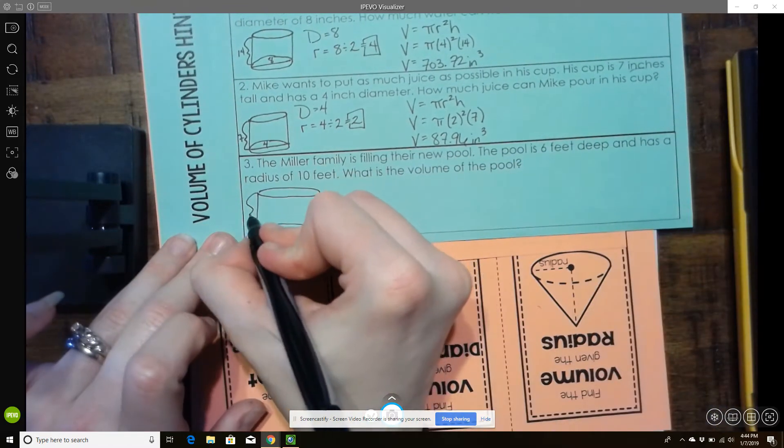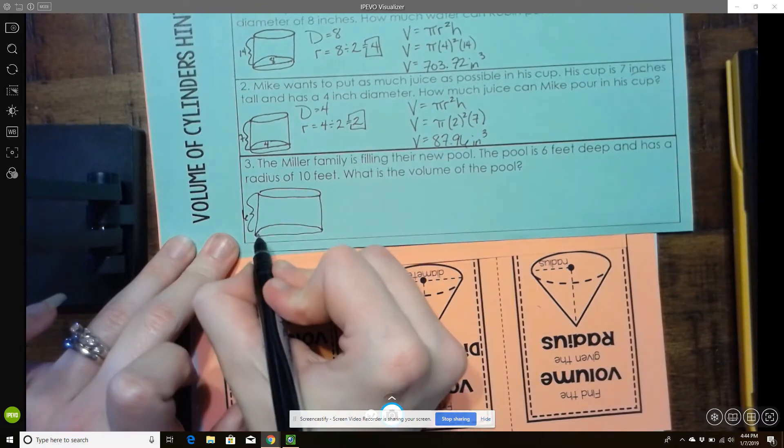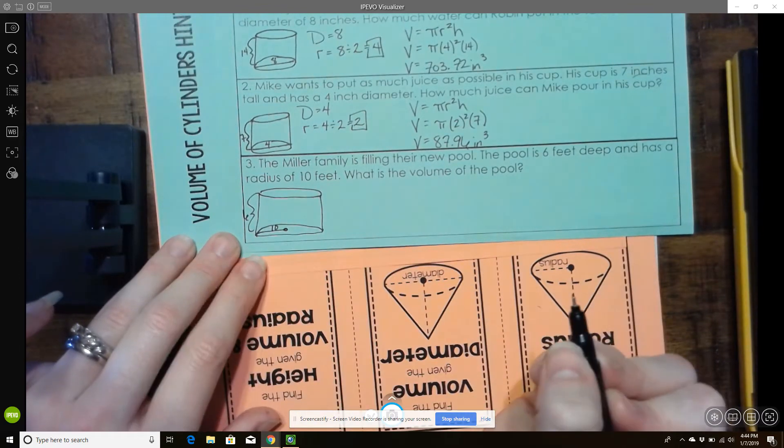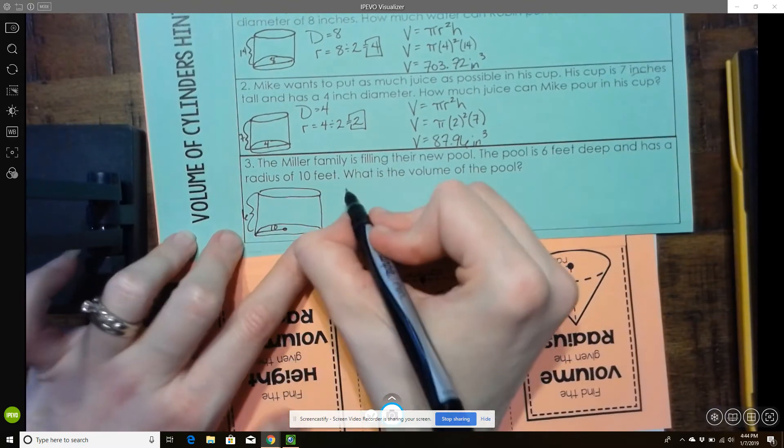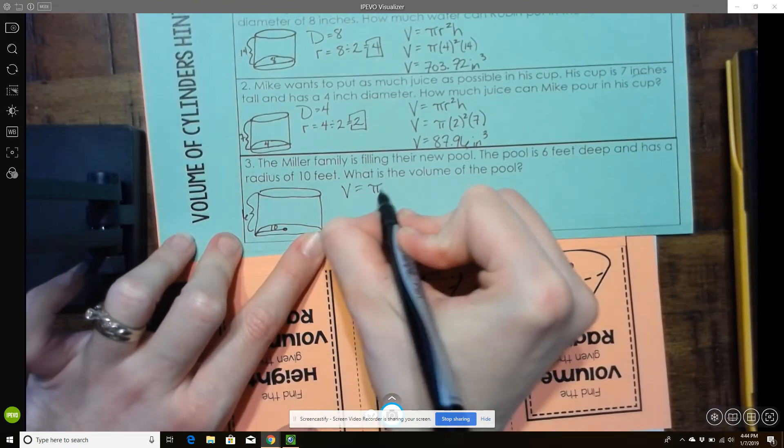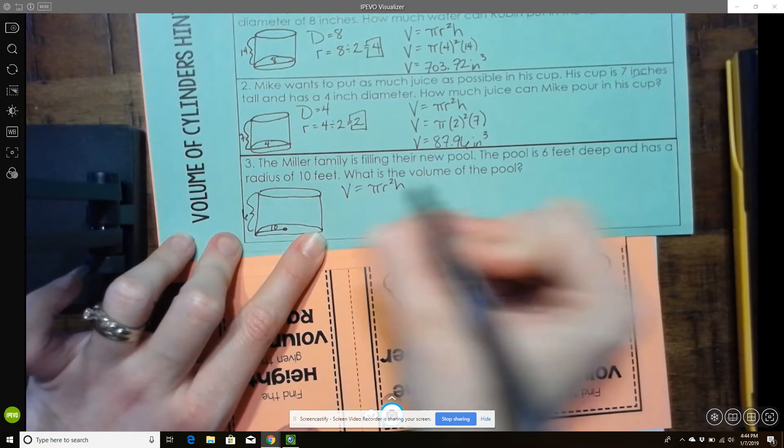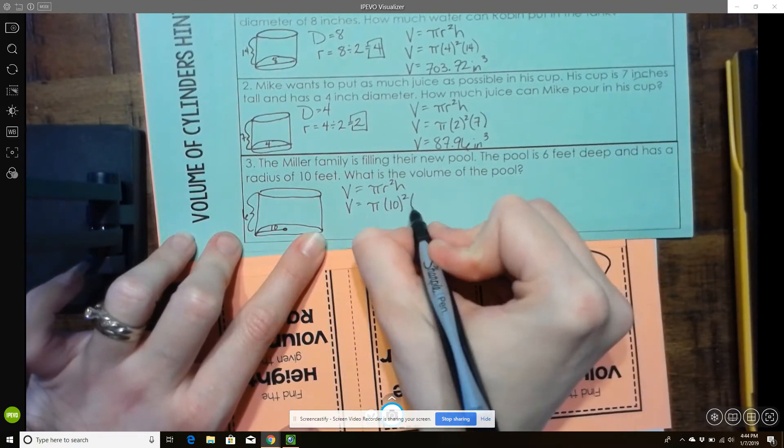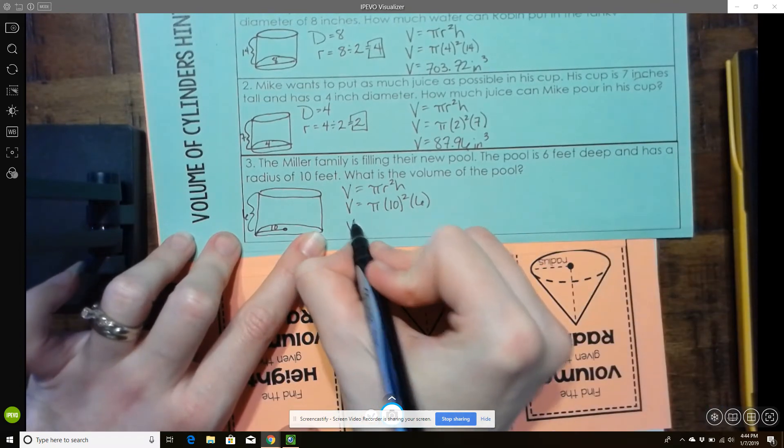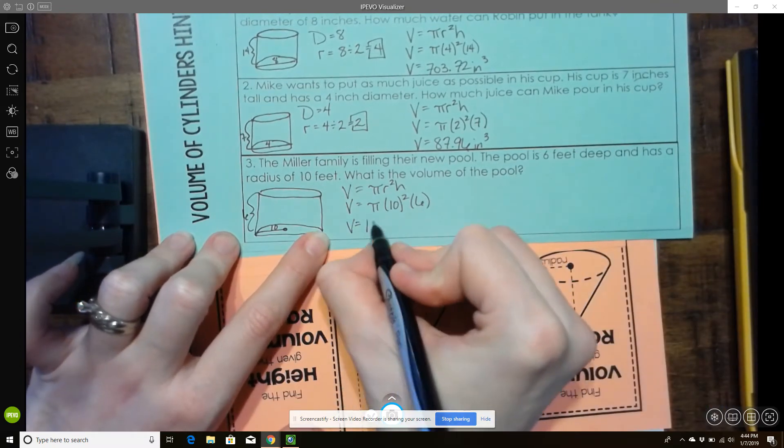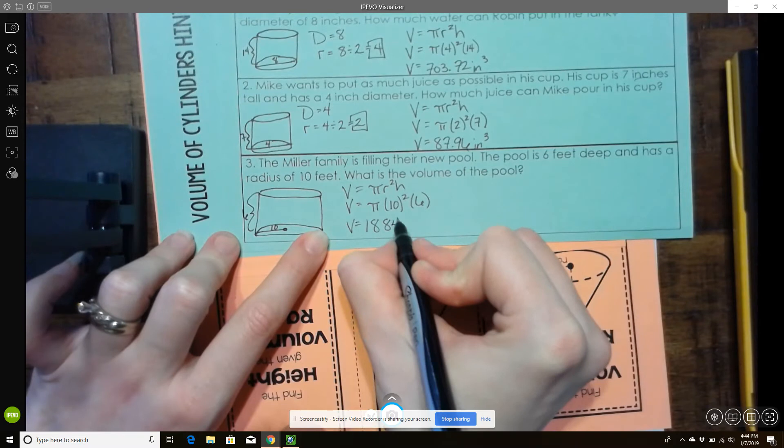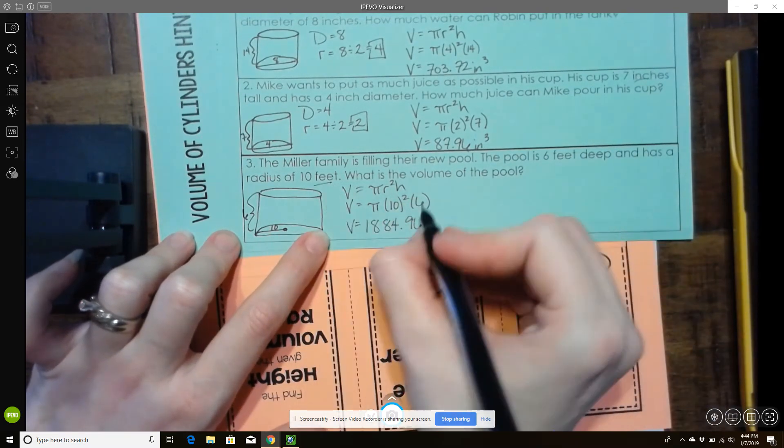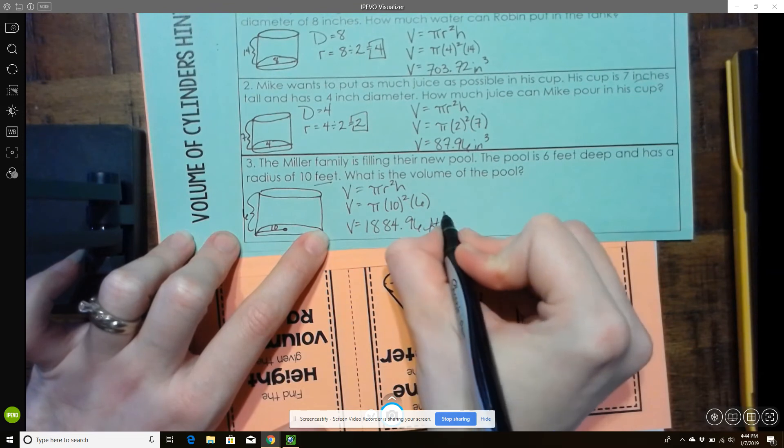So it's 6 feet deep. And this time they give me radius. Radius is 10 feet. So I don't have to convert anything. I can go straight to my formula. Pi r squared h. So the radius is 10. The height is 6. If I plug it into my calculator, I get 1,884.96. I'm dealing in feet. So feet cubed.